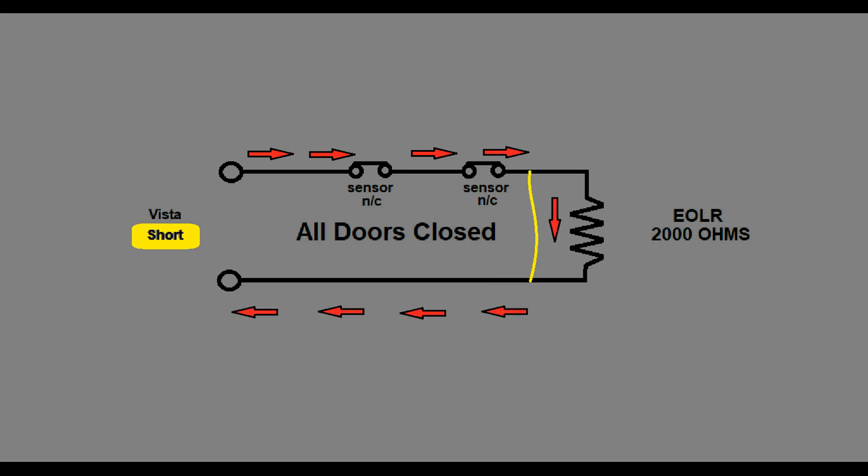Let's look at what happens with a short circuit. If there's a short across the end of line resistor, the current goes across the short, avoiding the resistor. The Vista panel will see the short and sound the trouble alarm.